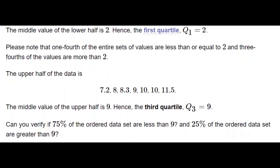So that's how we divide a data set into Q1, Q2, and Q3, where Q2 is the median of the data set, Q1 is the first quartile, and Q3 is the third quartile.